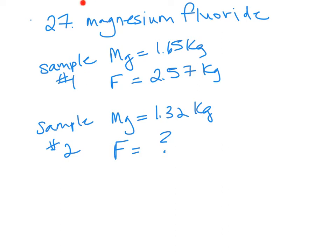For this one we're looking at the compound magnesium fluoride. When you have a compound, it's ratios of one element to the other in the compound. Those ratios are always going to stay the same. So if we are given the masses for magnesium and fluorine in one sample of magnesium fluoride, we can use that to problem solve how much of each element is in a second sample, given at least one piece of information.